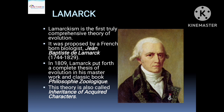Lamarckism is the first truly comprehensive theory of evolution. It was given by French-born biologist Jean Baptiste de Lamarck in 1809 in his book 'Philosophie Zoologique'. In this book he gave his detailed theory of evolution. This theory is also called the inheritance of acquired characters.